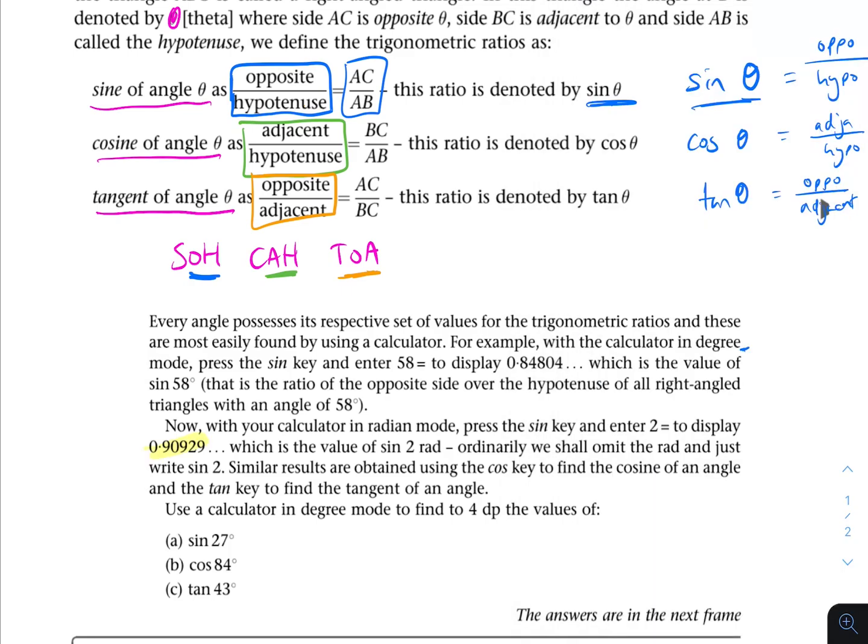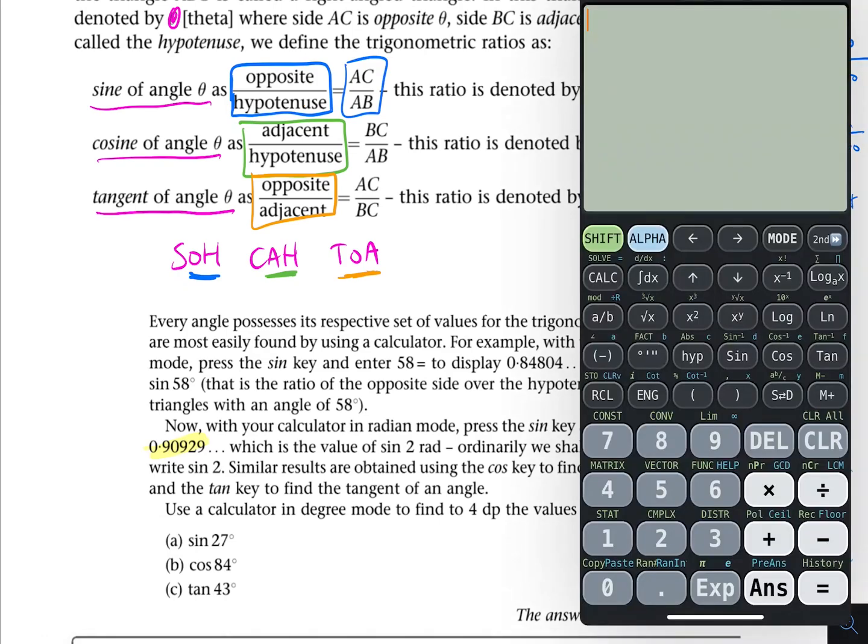Alternately, we shall omit the radian and just write sine 2. Similar results are obtained using the cosine key to find the cosine of an angle and the tan key to find the tangent of an angle. Use the calculator in degree mode to find four decimal places the values of sine 27, cosine 84 and tan 43. So do you want to give those a go?